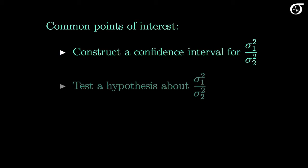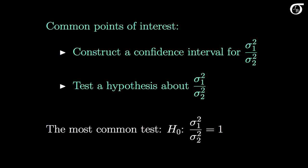Common points of interest lie in constructing a confidence interval for the ratio sigma 1 squared over sigma 2 squared, and we may also wish to test a hypothesis about the value of the ratio of population variances. When we do want to carry out a hypothesis test, by far the most common test is that the ratio of variances is 1, or in other words, that sigma 1 squared is equal to sigma 2 squared. It's just as easy to test a value other than 1, but often this is the most natural test. If we end up rejecting this null hypothesis, that means we have strong evidence that the populations have different variances, and that's very meaningful in some situations.